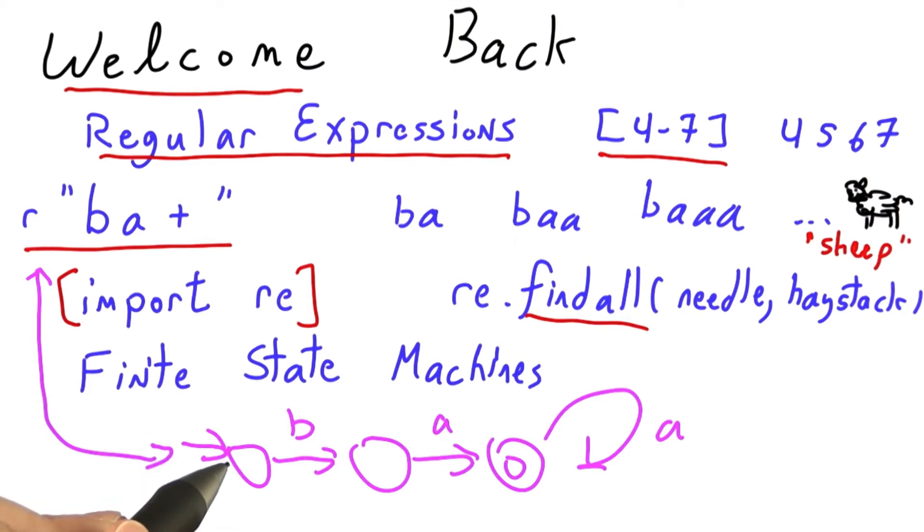Starting in the start state, on a B we transition to the middle state, on an A we end up in the third state, which is an accepting state. You can tell by the double circle, and then there's a self loop back.